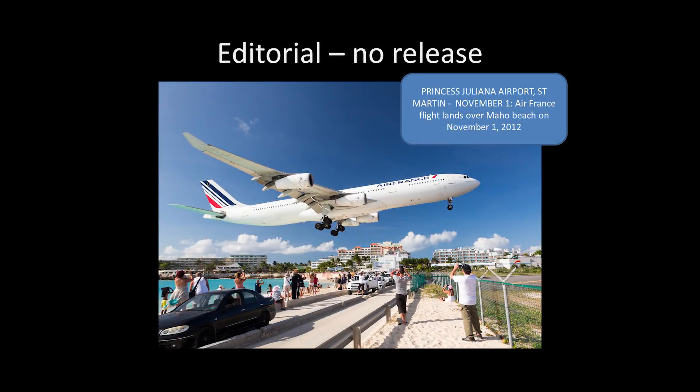Here's an editorial usage example: there are people in the image, but they've got their backs to the camera. The aeroplane is clearly Air France — I don't have an Air France property release and I certainly don't have model releases from these people — but it can be used in a newspaper to talk about this particular airport in St. Martin. These people can't say they don't want their picture included; they were in a public place and that's a risk of being in a public place.